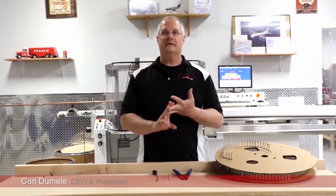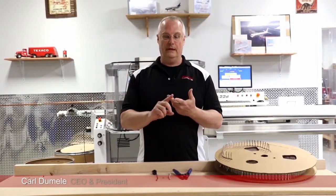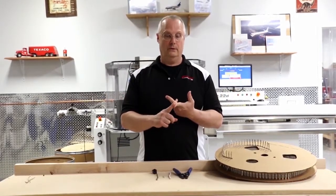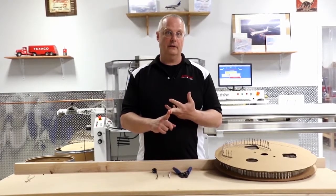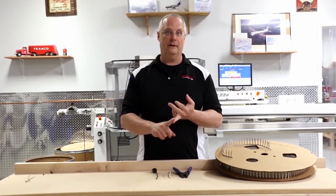We're going to look at three different crimp styles. We're going to look at a hand crimp, which is manual, a semi-automatic crimp, and a fully automated crimp.